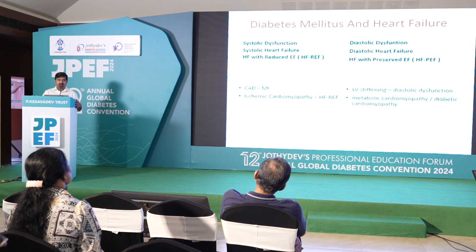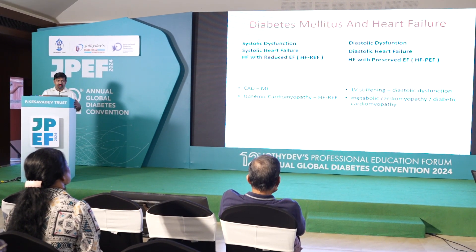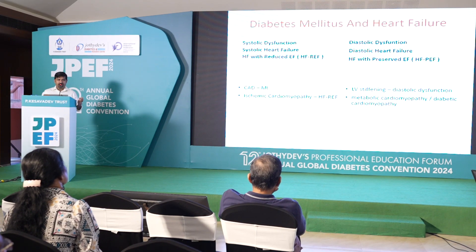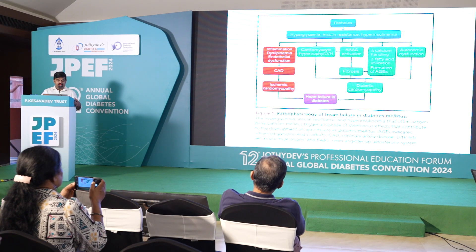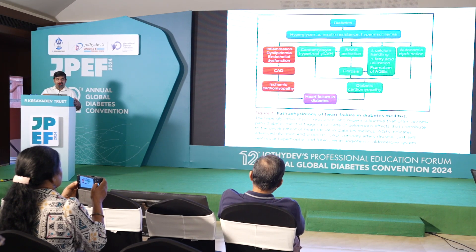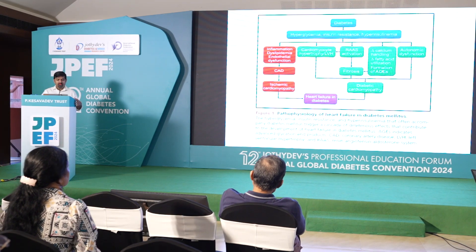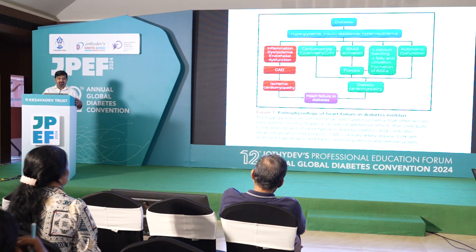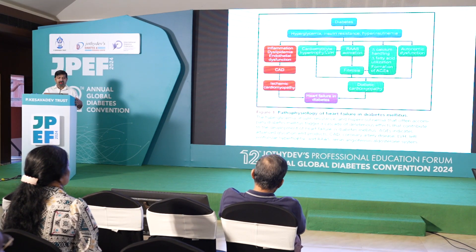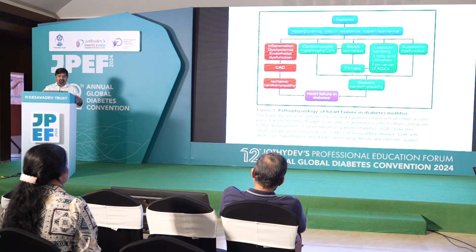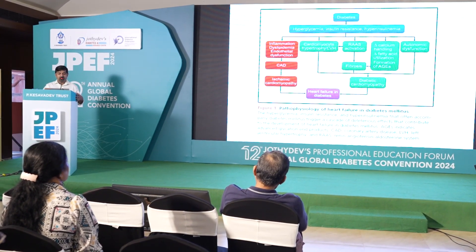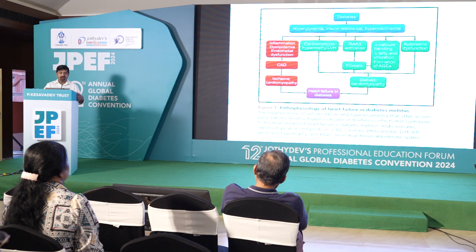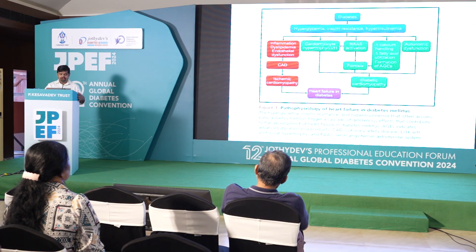Diabetic cardiomyopathy leads to left ventricular stiffening, diastolic dysfunction, and heart failure. Usually there is a component of concomitant hypertension leading to left ventricular hypertrophy and left ventricular stiffness. The detailed mechanism of diabetic cardiomyopathy involves predominantly a metabolic derangement in terms of calcium and fatty acid handling, autonomic dysfunction, RAAS activation, and fibrosis. Coronary disease leads to systolic dysfunction and heart failure with reduced ejection fraction.